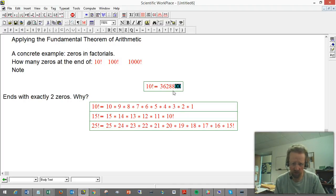10 factorial, not hard to do, it's on your calculator, it's 3,628,800, ends in two zeros. The question is why, how could we have predicted that it would end with two zeros without doing the calculation? Well, by definition, 10 factorial is 10 times 9 times 8, et cetera, down to 1.